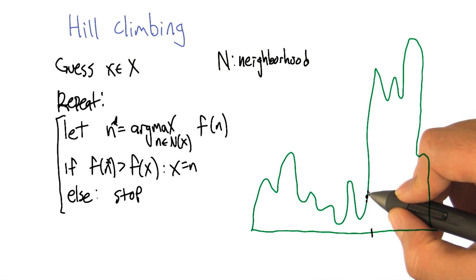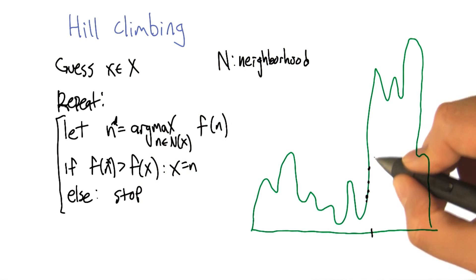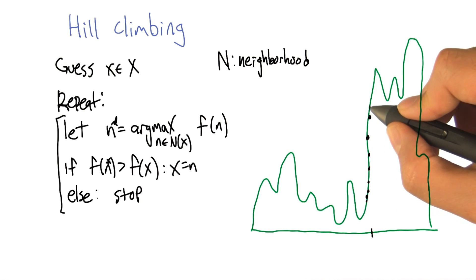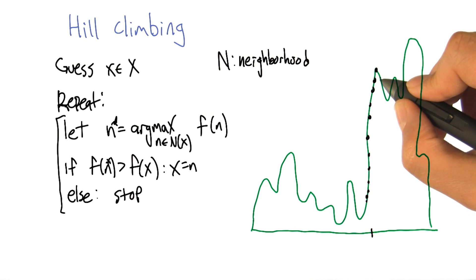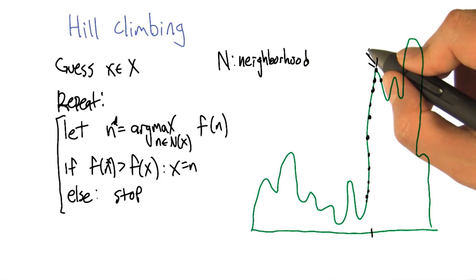So what this is going to do is iterate moving up and up this curve, always in a better and better direction, until it hits this peak here. Then it's going to look on both sides of it. Everything in the neighborhood is worse, so it just stops there and this is the x that it returns.